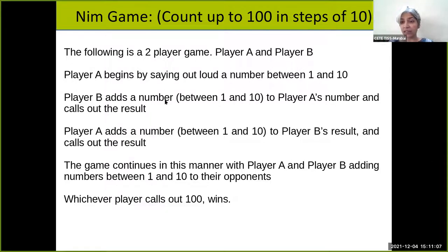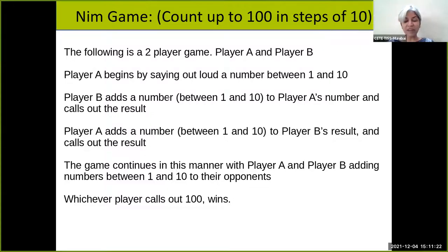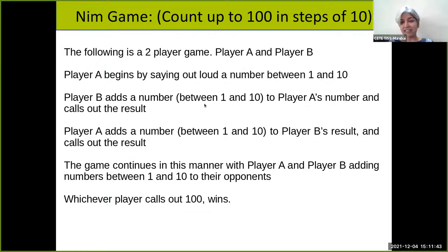Any other explanation? Someone suggests the last move option should have been less than 11. Mrunal explains: if the person has to enter at least a number one, then the winner will add ten and win — so there should be at least a difference of eleven. Let's see if the tables can be turned by playing again.